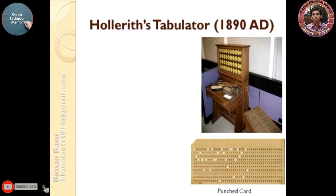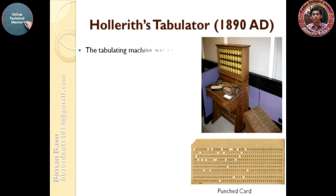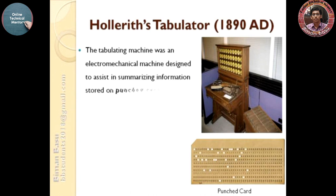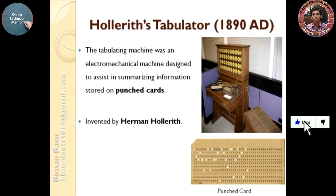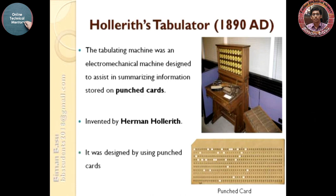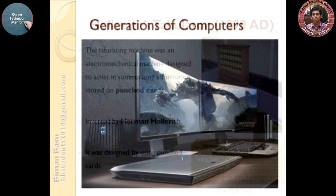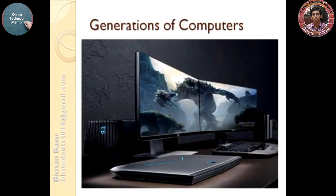Hollerith Tabulator, 1890 AD. The tabulating machine was an electromechanical machine designed to assist in summarizing information stored on punched cards. The picture is shown on the right-hand side.